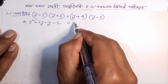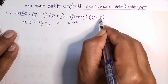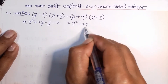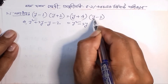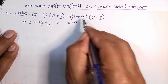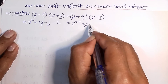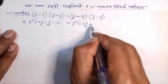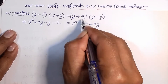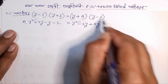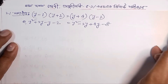Expanding the left side: y multiplied by y gives y squared, then minus 2y, plus 4. Expanding the right side: y+4 multiplied by y-2 gives plus 4y, plus four, minus two, equal to minus 8.